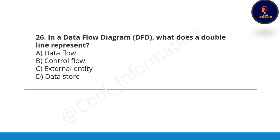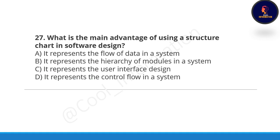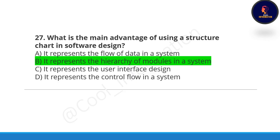Next question: in a data flow diagram, what does a double line represent? A double line actually represents a data store, so option D is correct. Note: if 'repository' is given as an option, you can also select that. Next question: what is the main advantage of using a structure chart in software design? Option B is correct — it represents the hierarchy of modules in a system.